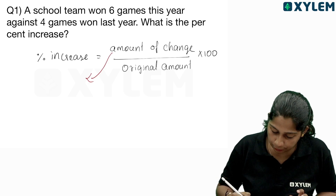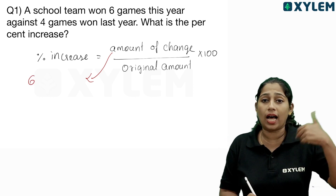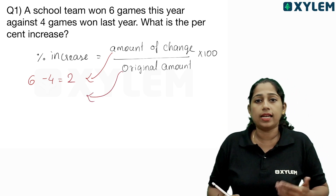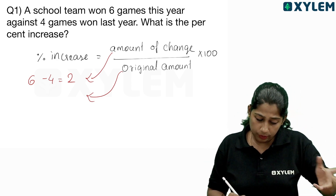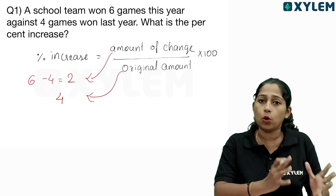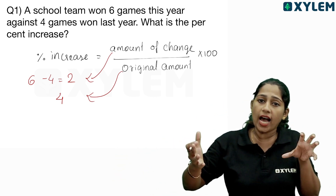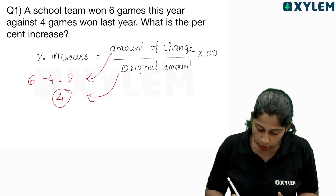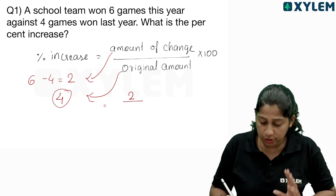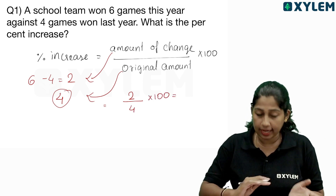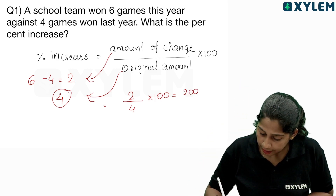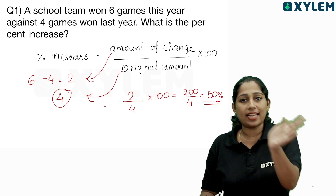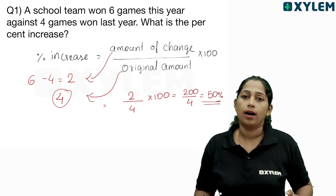Amount of change: this year 6 games, last year 4 games — that means the change is 2. Divided by original amount 4, into 100. So 200 divided by 4, that is 50%. So the percentage increase is 50%.